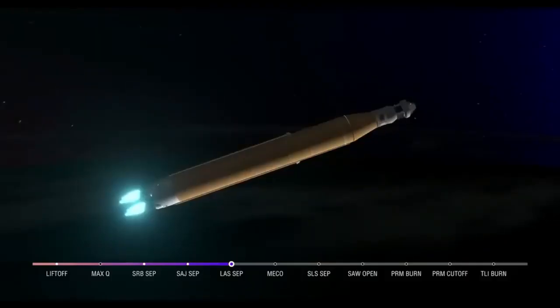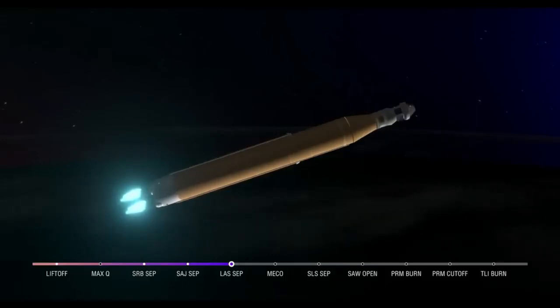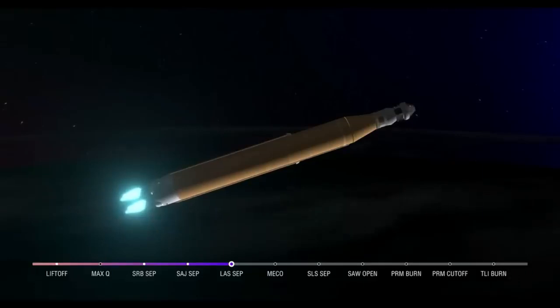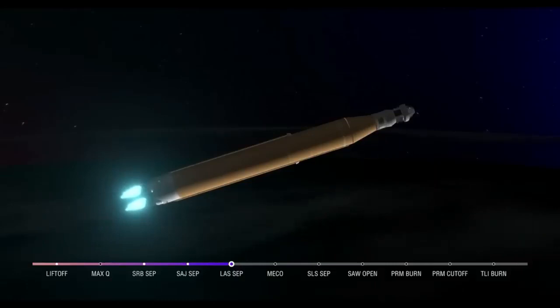The booster flight controller reports that the engines are looking good. Our core stage main engine cutoff time is about 8 minutes and 3 seconds. We are now at 5 minutes and 11 seconds into the flight, 7,656 miles per hour. Again, four good core stage engines, those four RS-25 engines. The last time those core stage engines flew, they were taking space shuttles to orbit and now with upgraded capabilities, they're launching the future of human space flight.